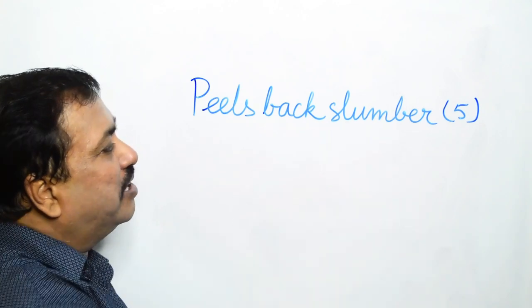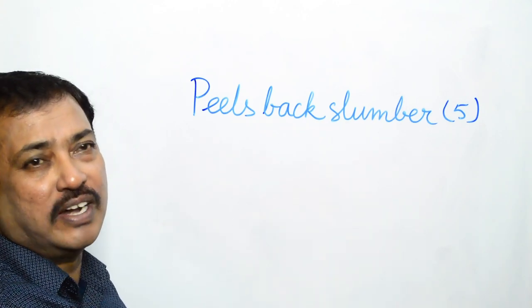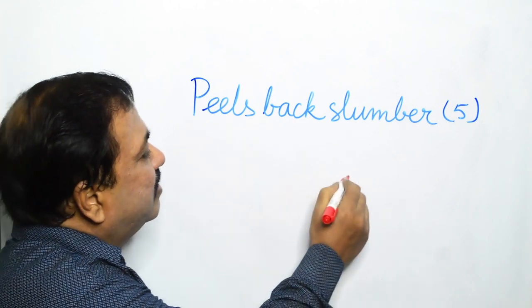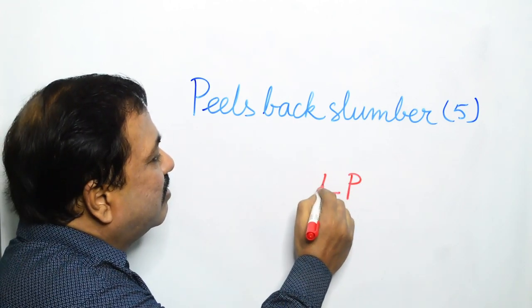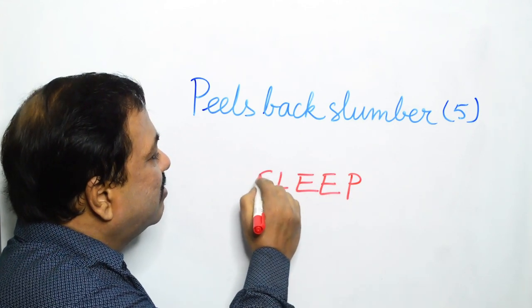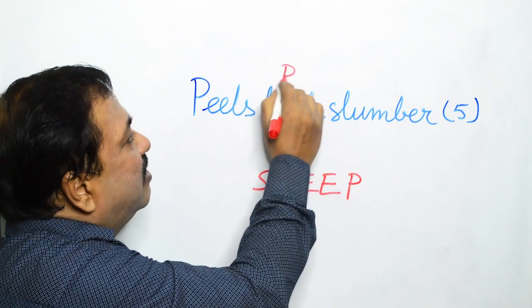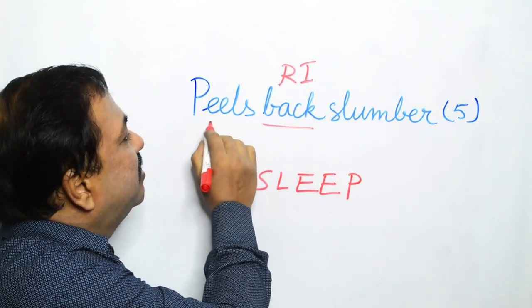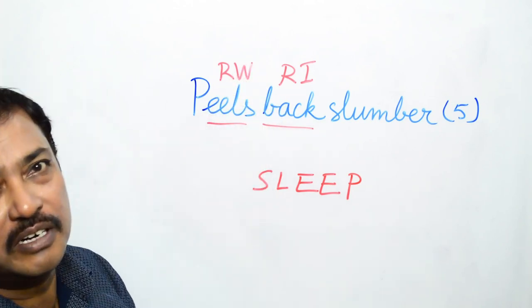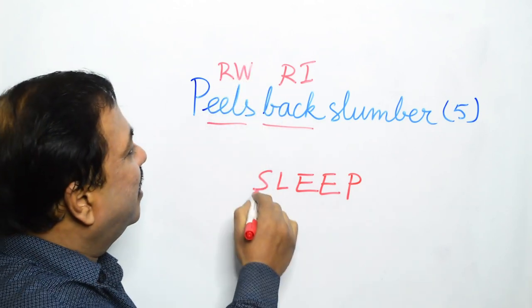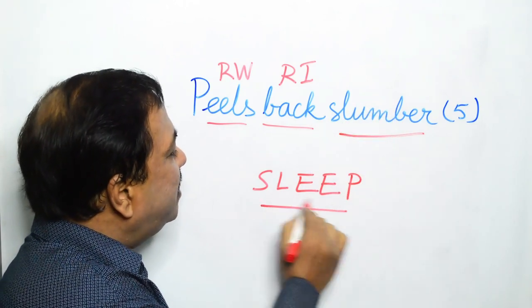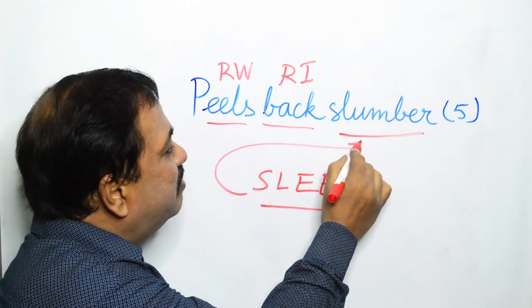Peels back slumber, asking for a five letter word. Simply peels back. Back is the reversal indicator, peels is the reversible word, and the definition is slumber. And what we get? Sleep. And what is sleep? Sleep is slumber.